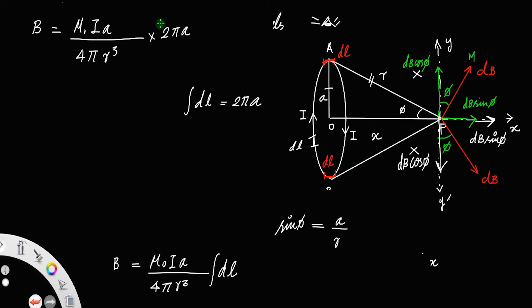Canceling 2π with 4π gives a factor of 2 in the denominator, so B = μ₀Ia²/2R³.